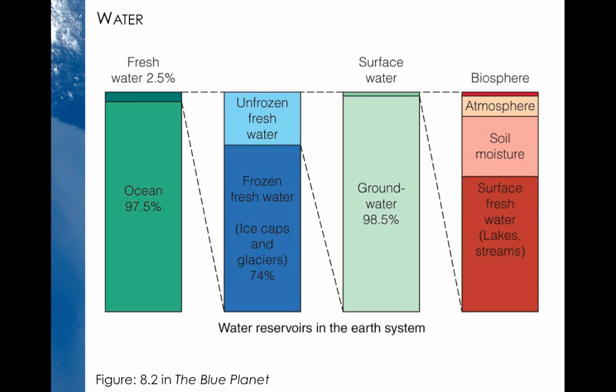So on a test, if we asked you what percentage of water is found in the ocean, we would accept answers from roughly 96 to 99 percent. The first thing that should be clear from this figure and the videos that you've seen is that the vast majority of water on Earth is in the ocean — 97.5 percent in this figure.